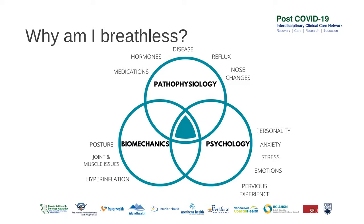Saline nasal rinses can ease sinus congestion and restore nasal breathing. Chronic pain and chronic hyperventilation often co-exist. Pain can cause an increase in respiratory rates generally. Moreover, patients with abdominal or pelvic pain often splint their abdominal muscles, which results in upper chest breathing. When treating those with chronic pain, it is helpful to work towards achieving nose-abdominal breathing as well as promoting relaxation.